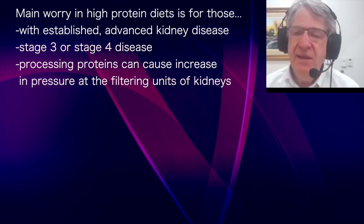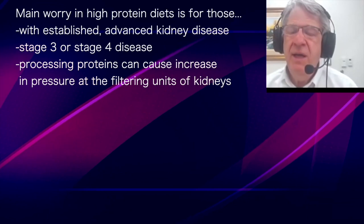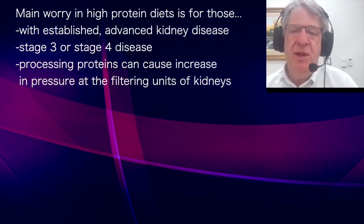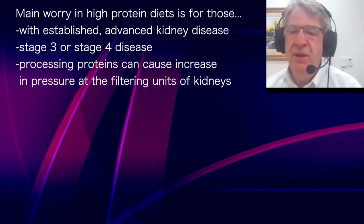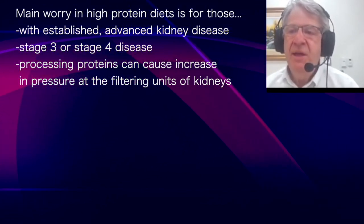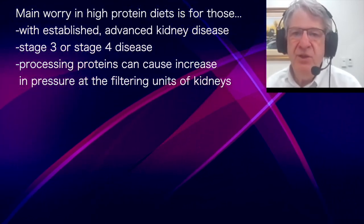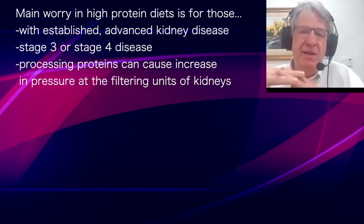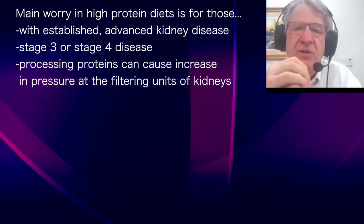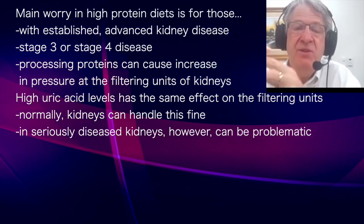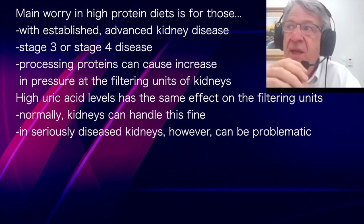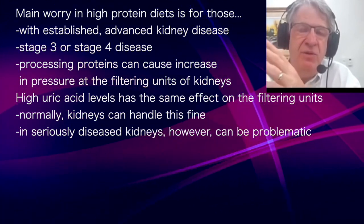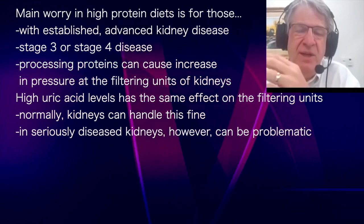The main worry with high-protein diets and kidney function is really in people who already have established kidney disease — particularly stage three or stage four. High protein intake tends to increase pressure transiently in the filtering units of the kidney, the glomeruli, and the kidney has about a million little filters per kidney. Uric acid does some of the same thing — raising uric acid increases pressure in those filters. Normally the kidney handles that well, but when it's already damaged, the remaining filters are already operating under higher pressure to maintain filtration, so any additional stress is more consequential.